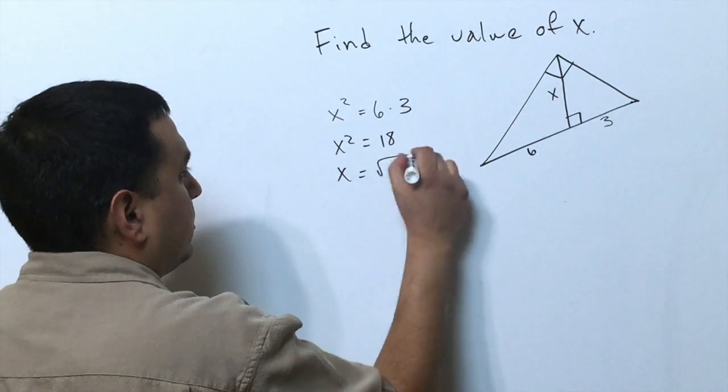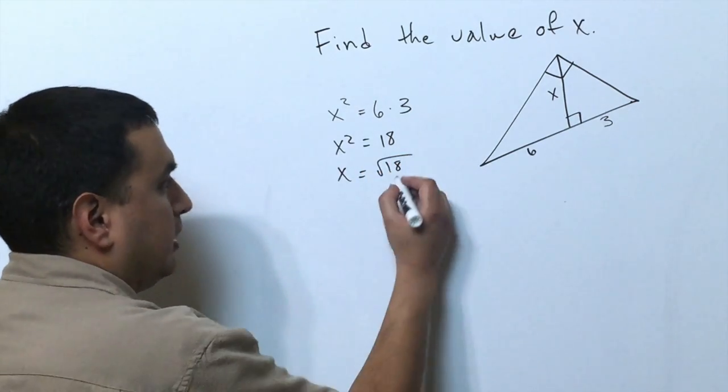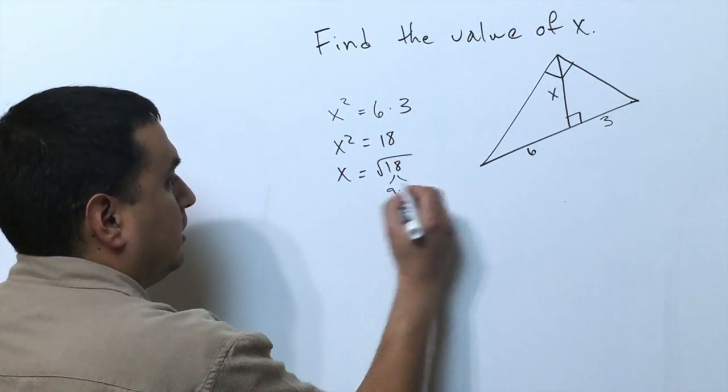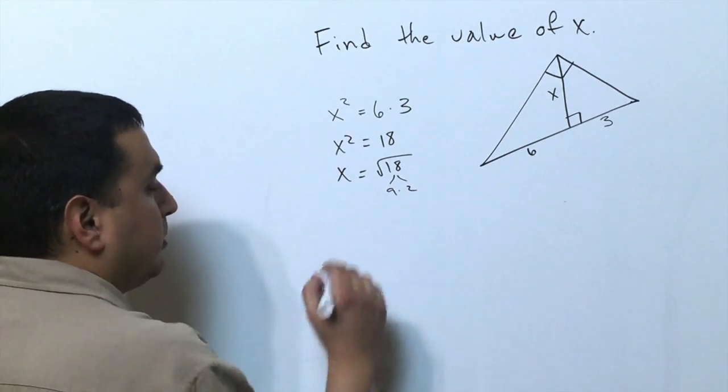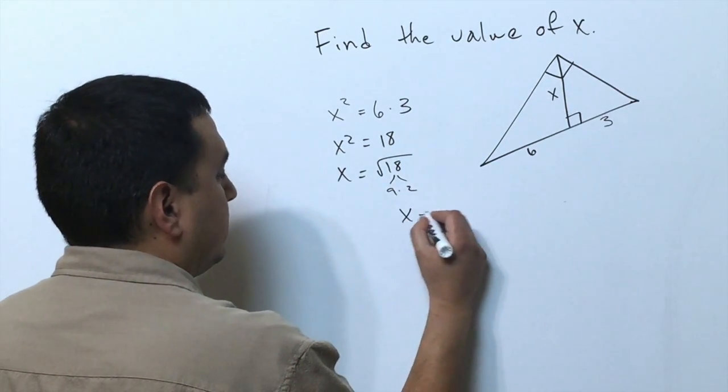That means x equals the square root of 18. If I factor this down, I'm going to use 9 times 2 because 9 is a perfect square, so x equals the square root of 9 times the square root of 2, which is 3√2.